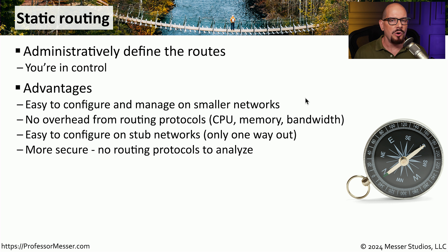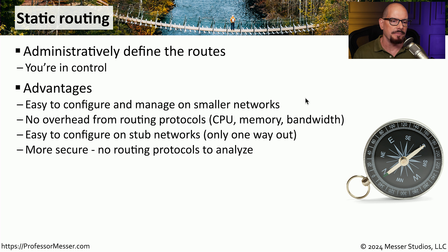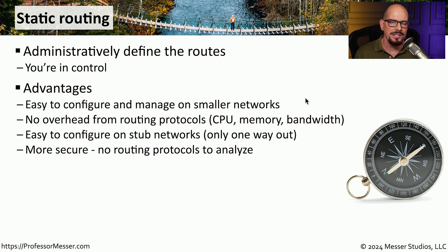Because we're using static routing, there's no overhead that you would normally see from a dynamic routing protocol — we'll talk about dynamic routing in a future video. So there's no CPU cycles, there's no memory usage. We are simply adding the route ourselves and don't have to do any additional processing to the routing table. This is very common for remote locations where you might have a single internet connection into that remote site, and all communication takes place over that single connection. We often refer to these as stub networks. And because we don't have to worry about dynamic routing updates or changes to the router configuration, this is a relatively secure form of routing.